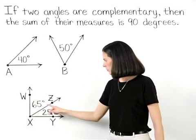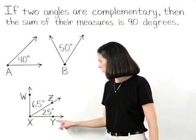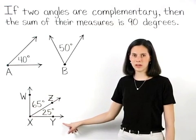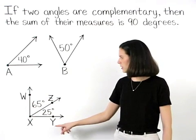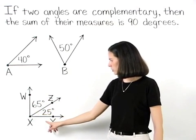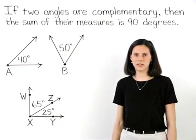In the second diagram shown, angles WXZ and ZXY are complementary because the sum of their measures, 65 degrees plus 25 degrees, equals 90 degrees.